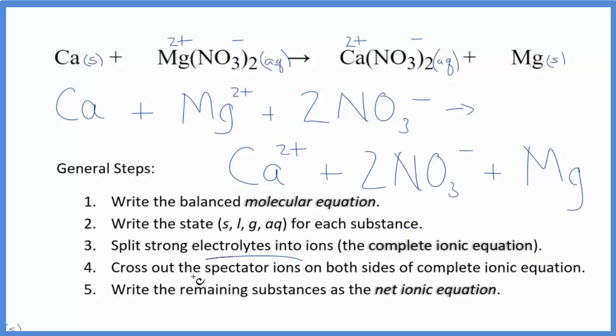Now we can cross out those spectator ions. They're on both sides. So I see calcium and the calcium ion, those are different. Magnesium ion, magnesium different. But the nitrate, that's exactly the same. So we can cross that out, it's a spectator ion. What's left, that's the net ionic equation for calcium plus magnesium nitrate.